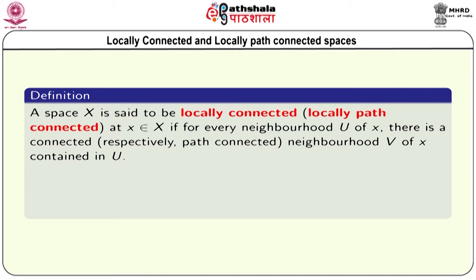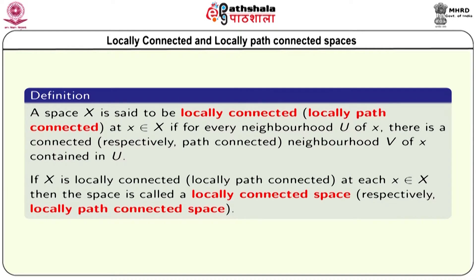We now define two more concepts: locally connected and locally path connected. A space X is said to be locally connected at x belonging to X if for every neighborhood U of x, there is a connected neighborhood V of x contained in U. It is locally path connected at x if for every neighborhood U of x there is a path connected neighborhood V of x contained in U. If X is locally connected at every point, the space is called locally connected; similarly, a locally path connected space is one that is locally path connected at every point.